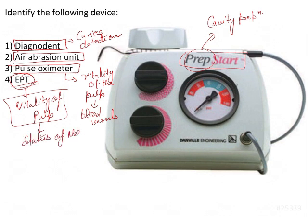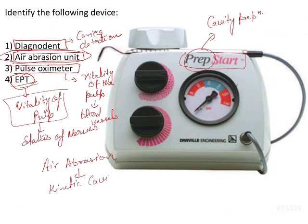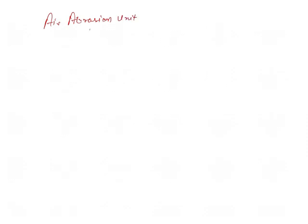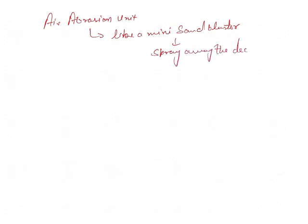The electronic pulp tester generally checks the status of the nerves. So we are left with one option: the air abrasion unit. The air abrasion unit, also called the kinetic cavity preparation device, is a device used to prepare the cavity. It basically works like a mini sandblaster.